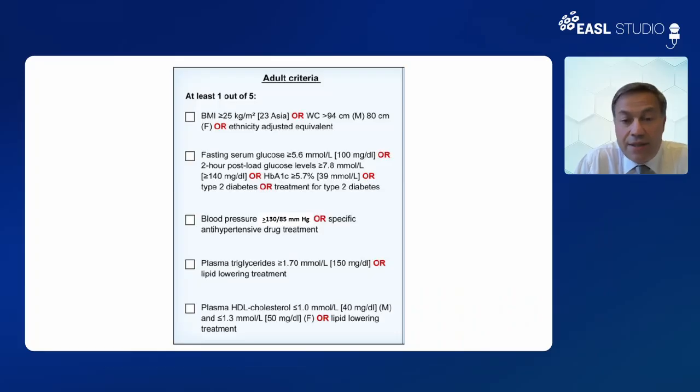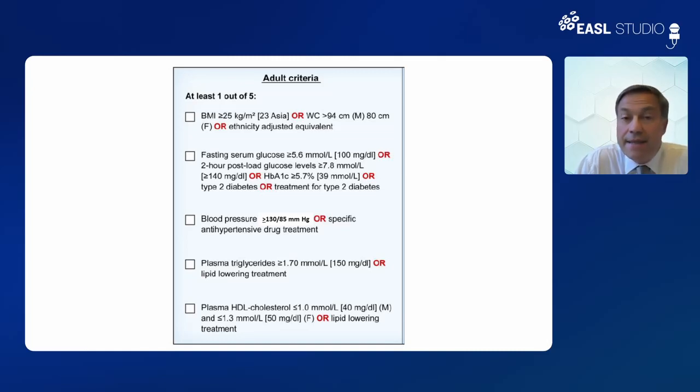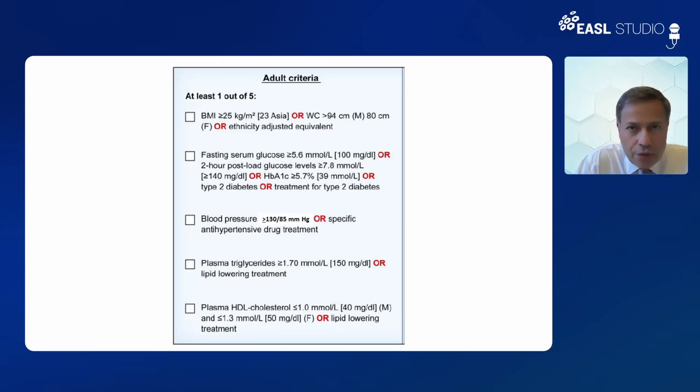Once you have done that — and if I can have the first slide, that will help us with the discussion — we have identified a list of criteria. I would like you to comment on whether these criteria, which are based on BMI, waist circumference, glycemic regulation, and lipid profile, are specific and sensitive enough to diagnose metabolic dysfunction and insulin resistance, and whether only one of these criteria is sufficient to diagnose the disease.